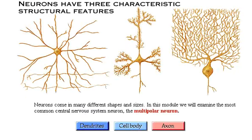Neurons come in many different shapes and sizes. In this module, we will examine the most common central nervous system neuron, the multipolar neuron.